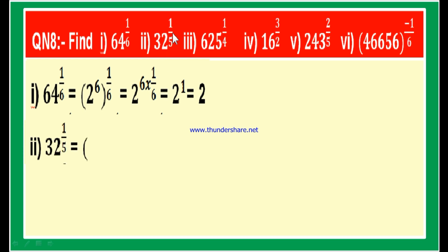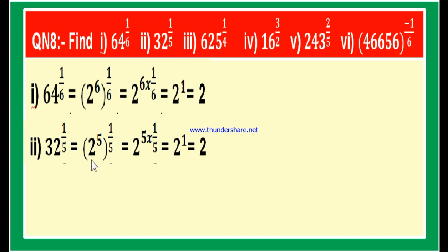Now the second part: 32 to the power of 1 by 5. We know that 32 equals 2 into 16, 16 is 2 into 8, 8 is 2 into 4, and 4 is 2 into 2. So 32 equals 2 power 5. Therefore 2 power 5 whole power 1 by 5 equals 2 to the power of 5 into 1 by 5, which is 2 power 1, equal to 2.